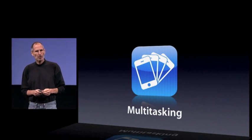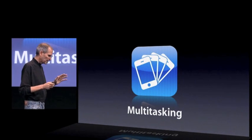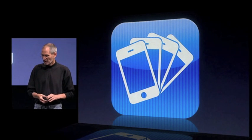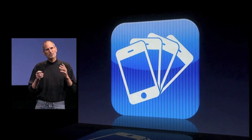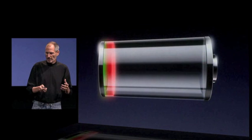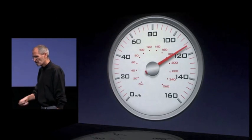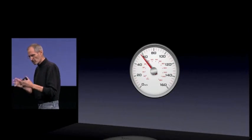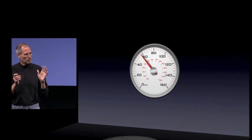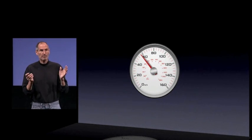Now we weren't the first to this party, but we're going to be the best — just like cut and paste. Other people had cut and paste before we did, but everybody has widely believed that we just nailed it, and it's much better than any other implementation. I think people will think the same about multitasking, because it's really easy to implement multitasking in a way that really drains battery life. These apps start running in the background, and there goes your battery. And it's really easy to implement it in a way that reduces the performance of the foreground app and makes your phone feel really sluggish.